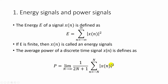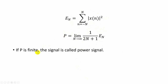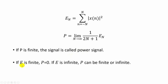If we consider the energy term as E_N, then the power can be written as the limit as N tends to infinity of 1 over (2N+1) times E_N. If the calculated power is finite, then the signal is called a power signal. If energy is finite, power is equal to zero. If energy is infinite, power can be finite or infinite. If energy is finite, we call it an energy signal; if power is finite, we call it a power signal.